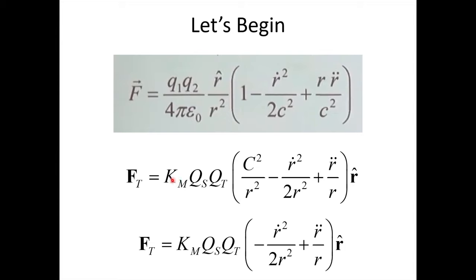Okay, km is mu over four pi, which moves the c squared up into the numerator. And basically, this first term over here becomes Coulomb's model. I have no problem with Coulomb's model, so we can put this one off to the side. Now we're left with this.